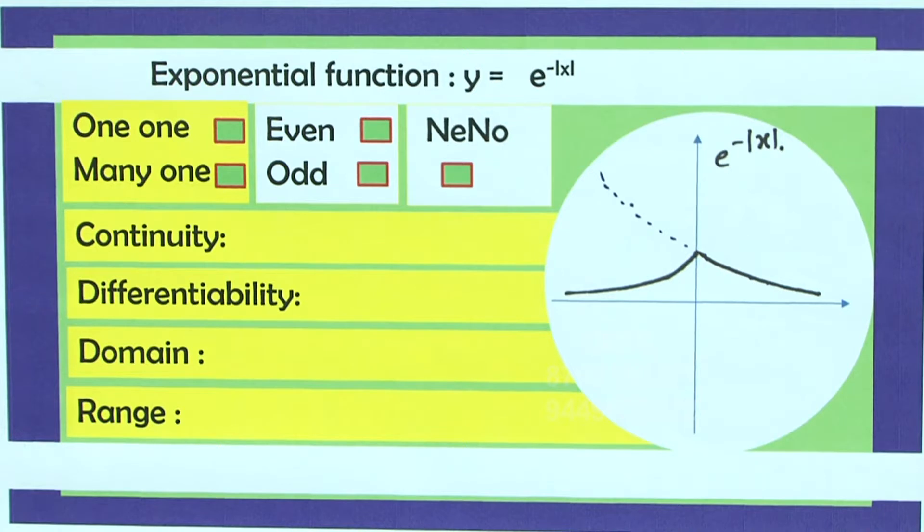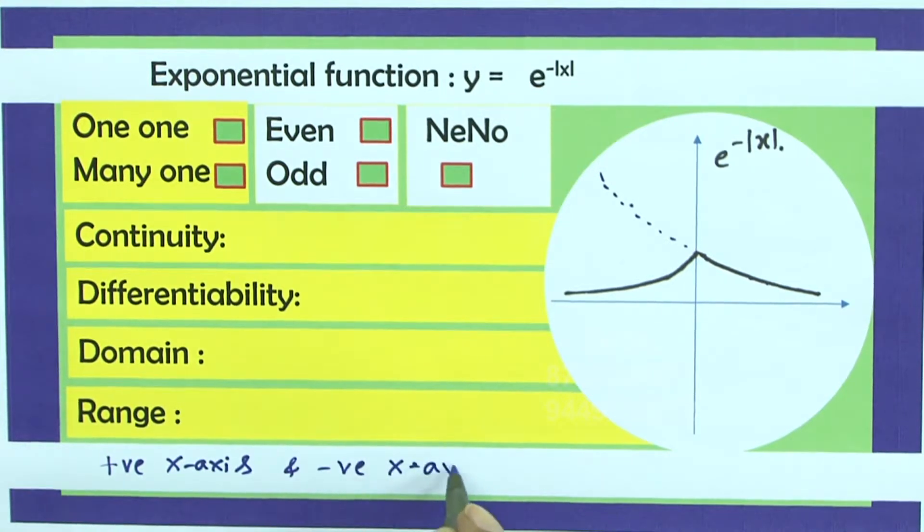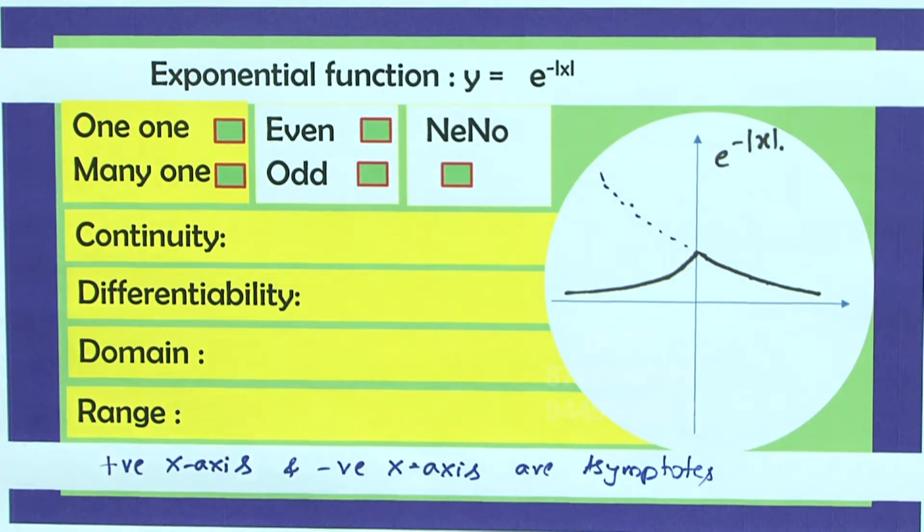And definitely anybody can say positive x-axis and negative x-axis are asymptotes. Do you agree with me?